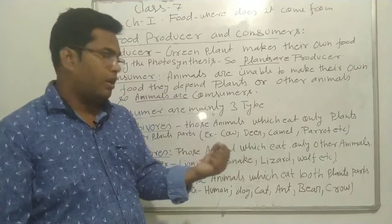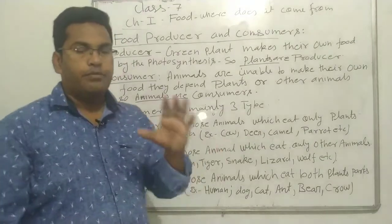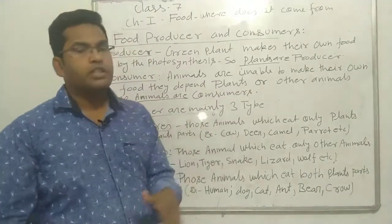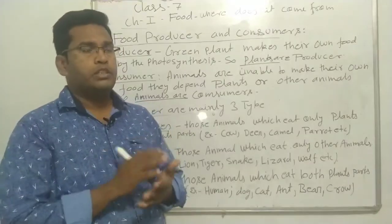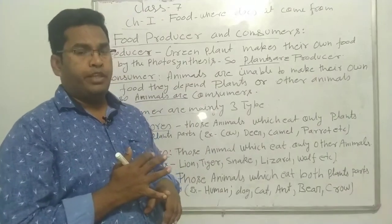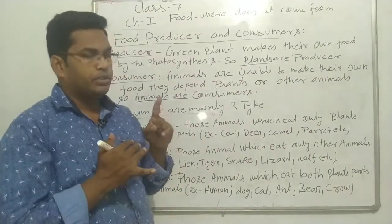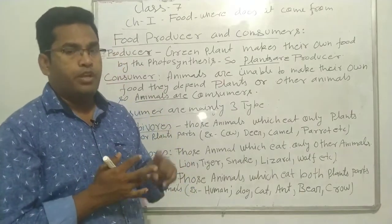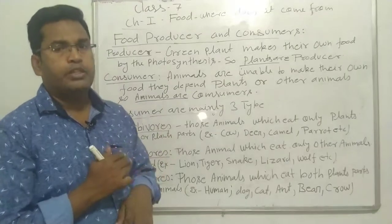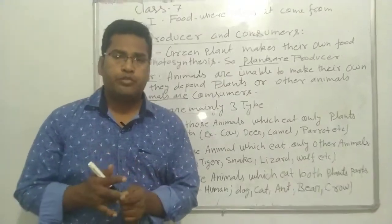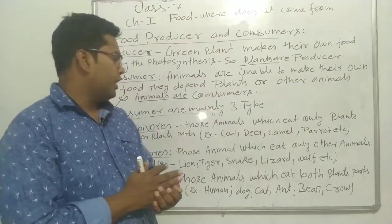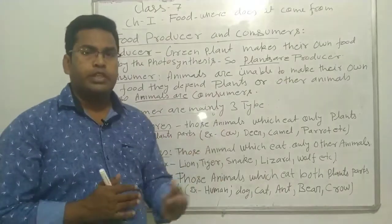Plants and plant parts — we eat plant parts. We eat root, stem, leaves, flower, and fruits. We eat everything — fruits, leaves, flowers, and plants. So many plants and many parts are used as food.